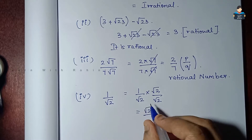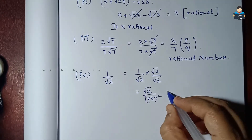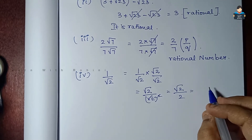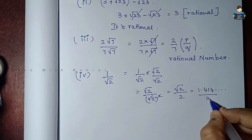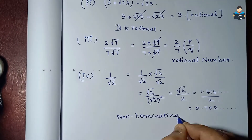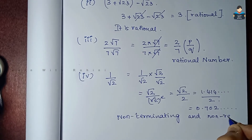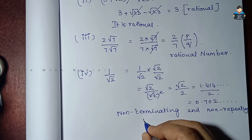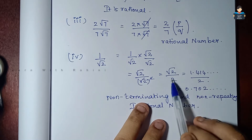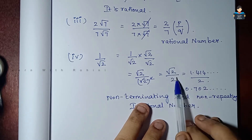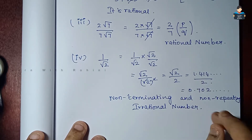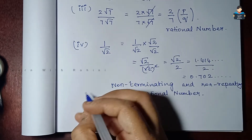So √2 divided by (√2)² equals √2 divided by 2. The value of √2 is approximately 1.414, and 1.414 divided by 2 gives 0.707, which is non-terminating and non-repeating. So the answer is irrational. Multiplying or dividing by a rational number does not change an irrational number.